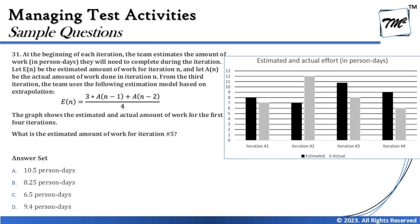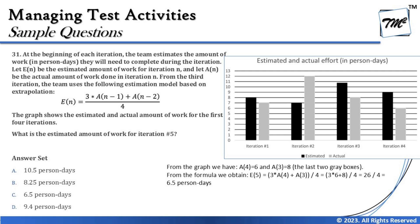Extrapolation is an estimation technique used in agile development models to do estimation based on completed sprints. We don't have a predefined reference, so as we start the project we use completed sprint estimated-versus-actual data to determine how much work to be done for the next sprint. The formula divides by four because four iterations have been completed so far. From the graph, A(4) = 6 and A(3) = 8, read from the gray bars on the chart.